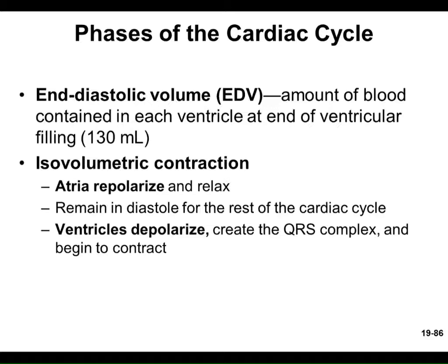EDV — end diastolic volume — is the volume of blood in the ventricles at the end of their relaxation time. This is the maximum amount of blood sitting in the ventricle before it squeezes, on average 130 mL. Then isovolumetric contraction begins: the atria are done squeezing and repolarizing, and the ventricles begin to squeeze — but not enough yet to push open the semilunar valves, so volume isn't changing.